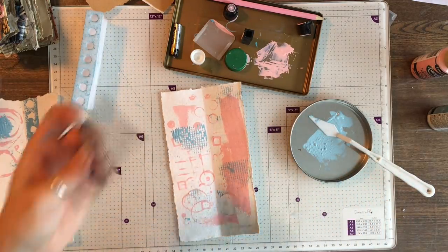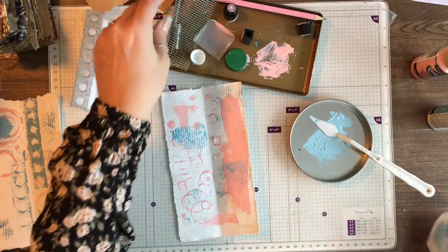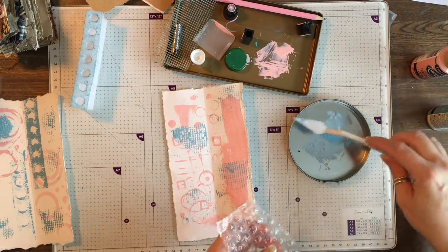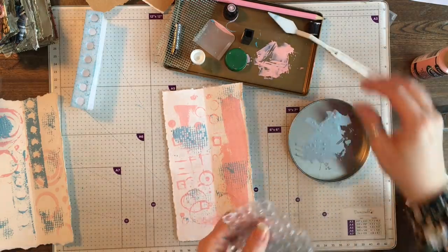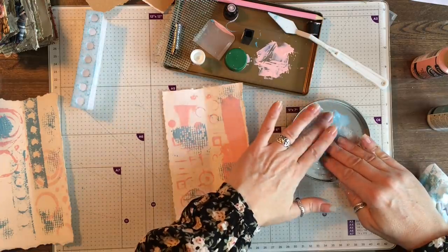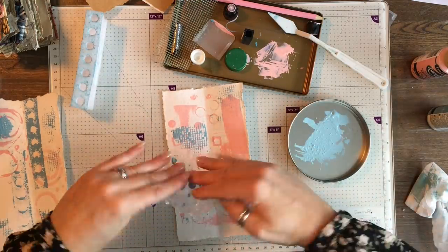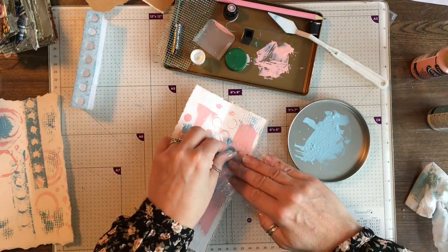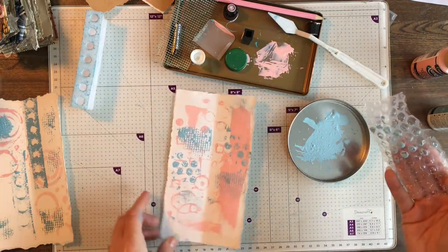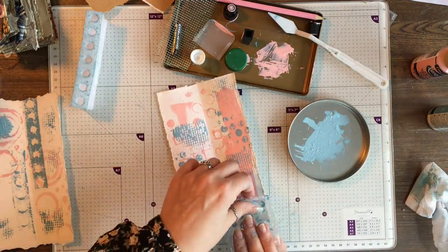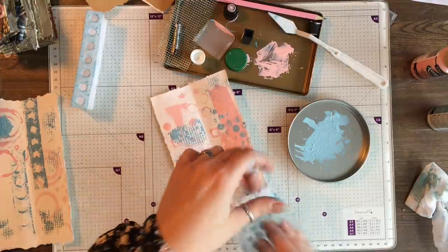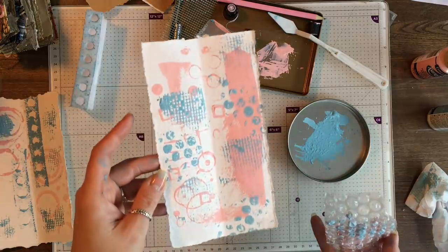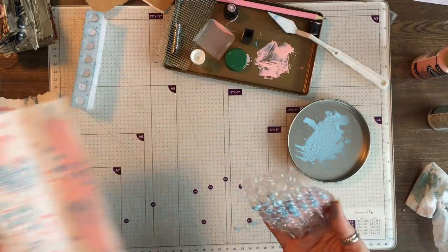Okay, let's try a little bit of the bubble wrap now. Move that over there. So I'm just going to literally dip my bubble wrap into my paint and add some circles. But of course, you could do these techniques using different colors as well. So we've got lots and lots of texture on that page now.